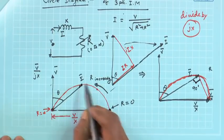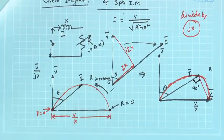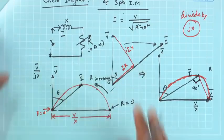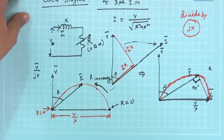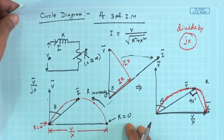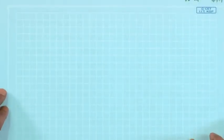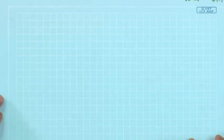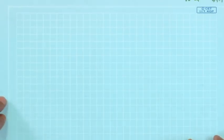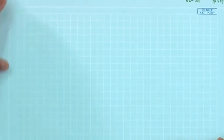This is the position of the tip of the current phasor for a finite value of R in between 0 and infinity, and this we have established. Now, this particular result can be applied to obtain the circle diagram of the induction motor.